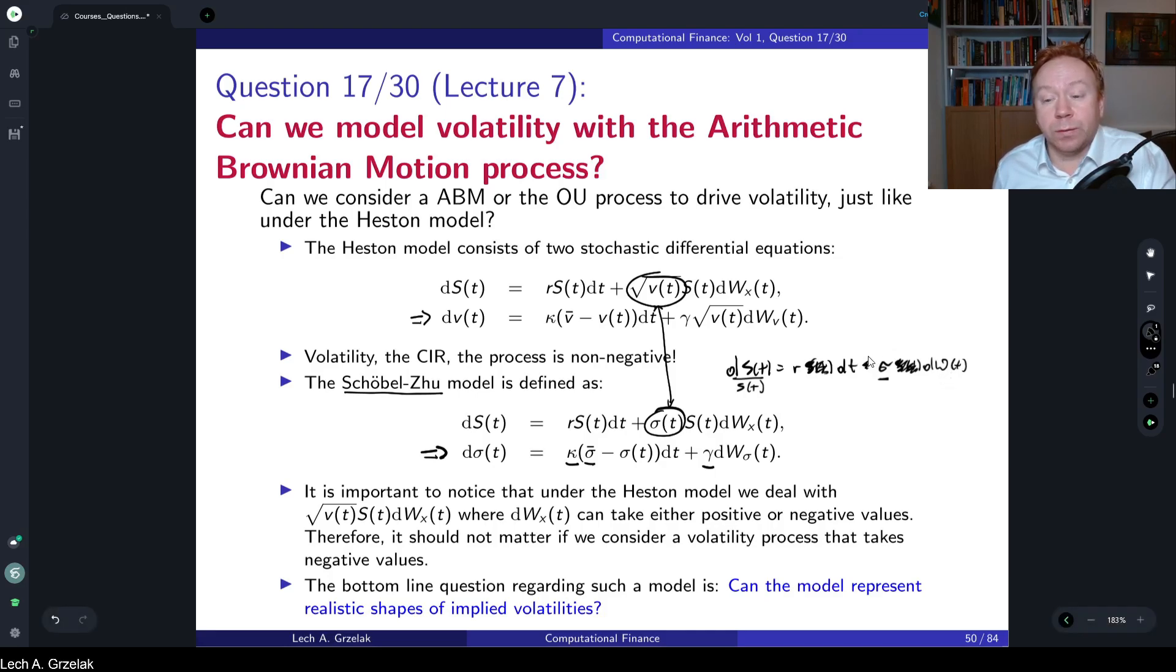So in essence, it should not matter if we have a minus sign here because it's symmetric. It would not really matter in terms of simulating paths. Whether we take volatility to be positive or negative doesn't matter. Of course, interpretation is more difficult to think about negative volatility. But if you look from the perspective of a stochastic process, that should not matter so much. And this is the motivation for the Schöbel-Zuh model, where they specify the volatility by the normally distributed process.